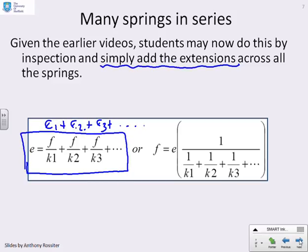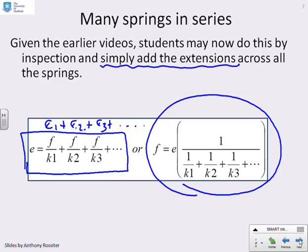I can rearrange that model to get force on its own and extension times a constant on the other side—there it is—and what that gives me is an effective stiffness here in the brackets, kt, which is 1 over (1 over k1 plus 1 over k2 plus 1 over k3 and so on).